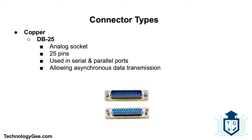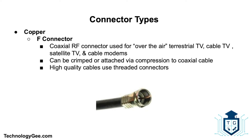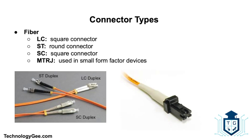The DB25 connector is an analog socket with 25 pins from the D-sub miniature connector family, mainly used in serial and parallel ports for asynchronous data transmissions. The F connector is a coaxial radio frequency connector used for over-the-air terrestrial television, cable television, satellite television, and cable modems. It can be crimped or attached via compression to the coaxial cable, and high-quality cables use a threaded connector.